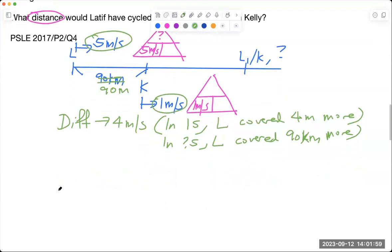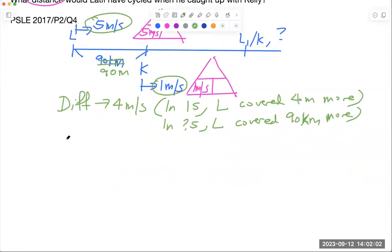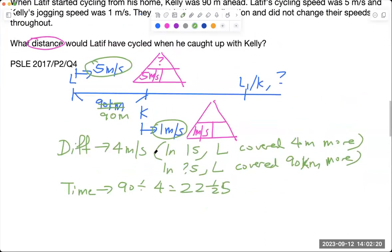So with this, we can just do a simple calculation, which is time is 90 divided by 4. That is 22 and a half minutes more. Sorry, seconds more. So in a sense, L actually spent 22 and a half seconds to cover, to travel from here to here.